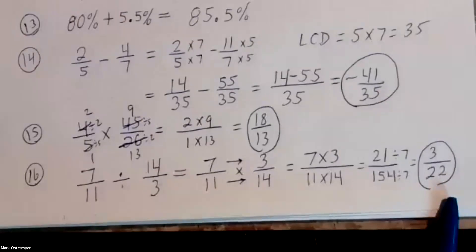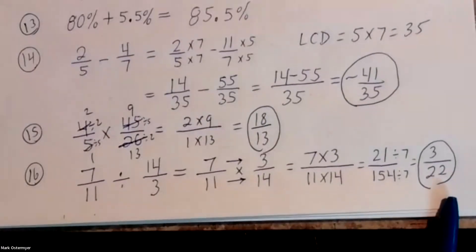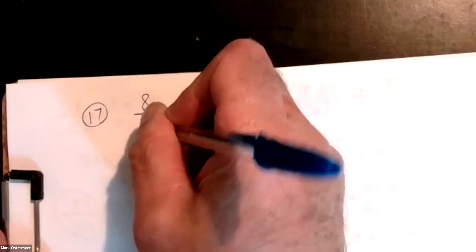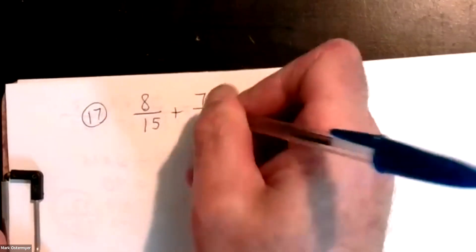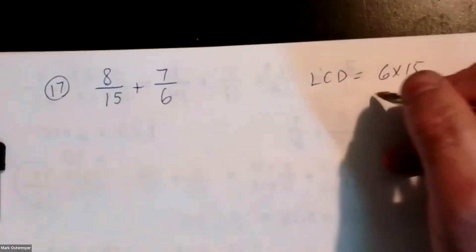It's eight over fifteen. Number seventeen — oh I'm sorry, there's more. Eight over fifteen plus seven sixths. Common denominator is going to be six times fifteen again, which is ninety.